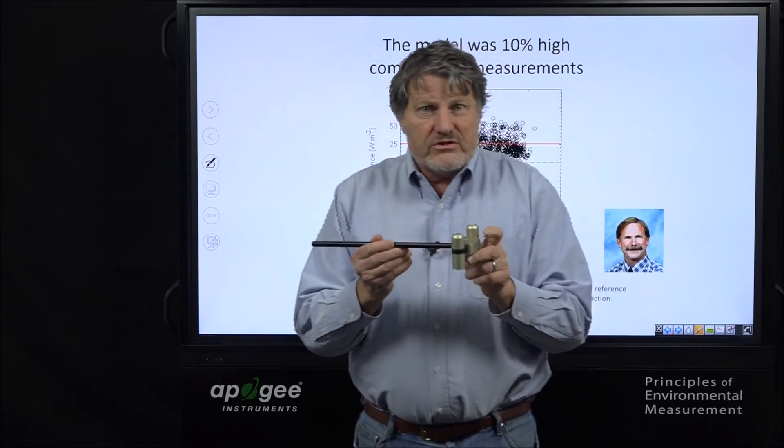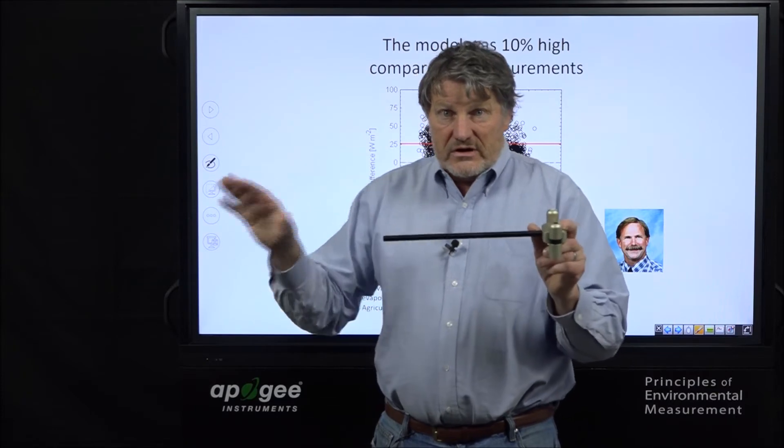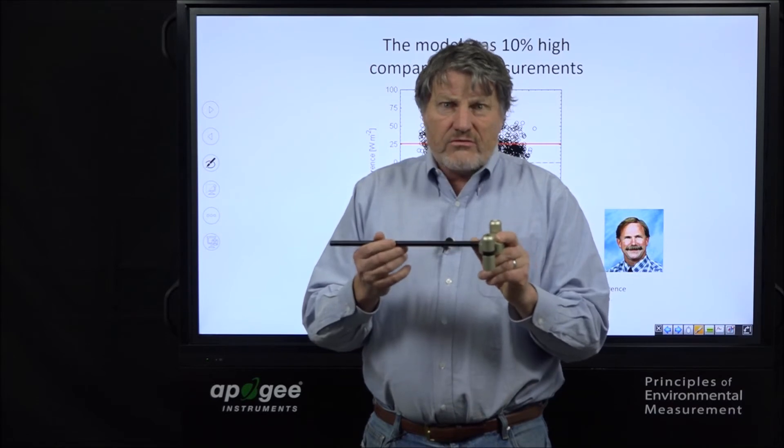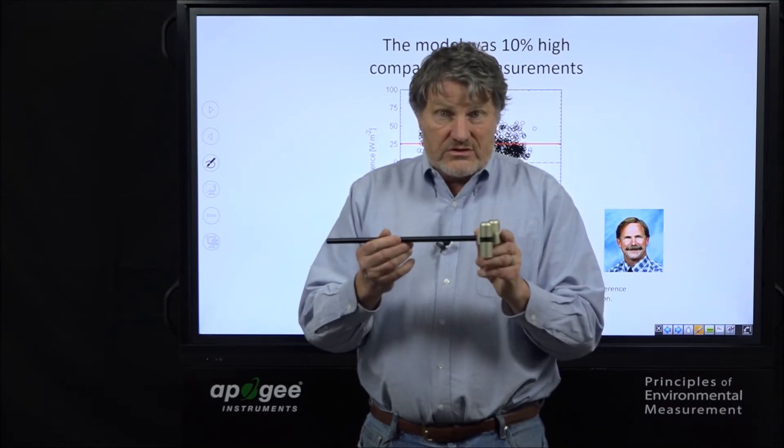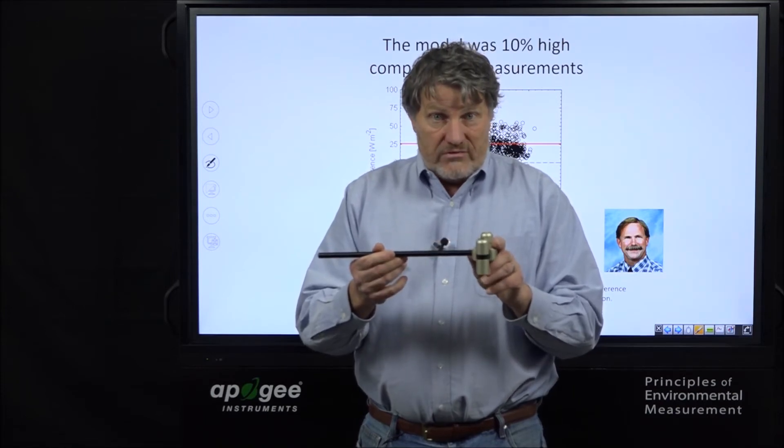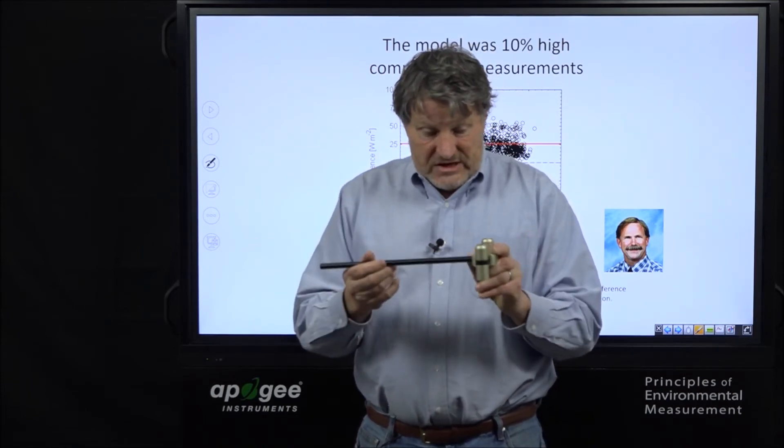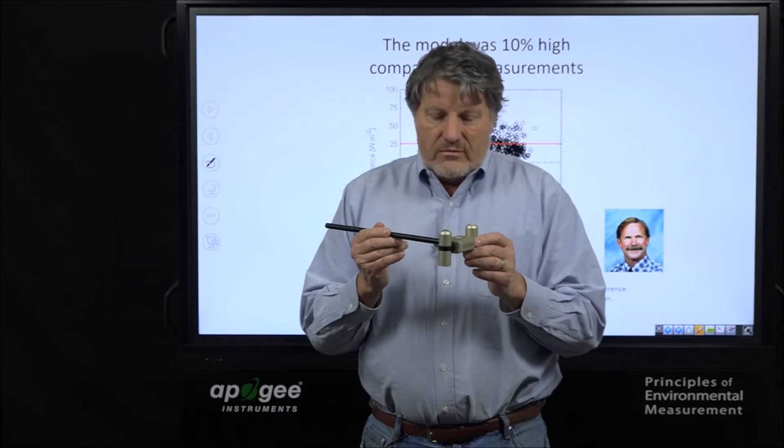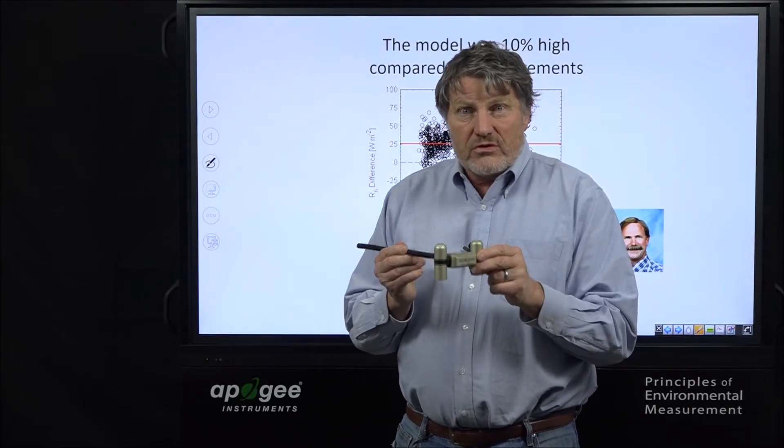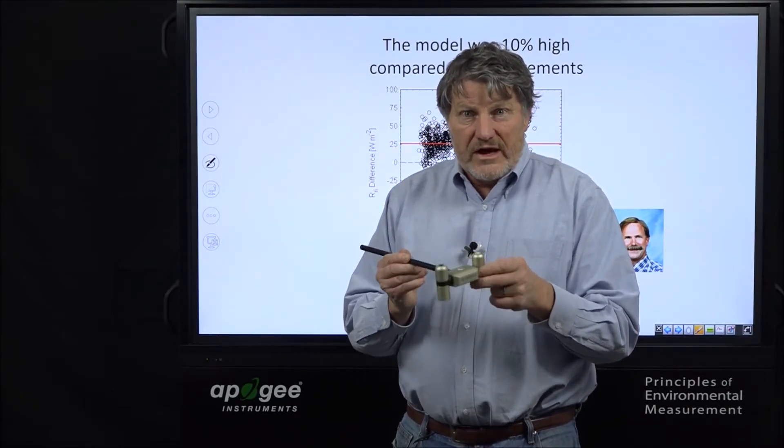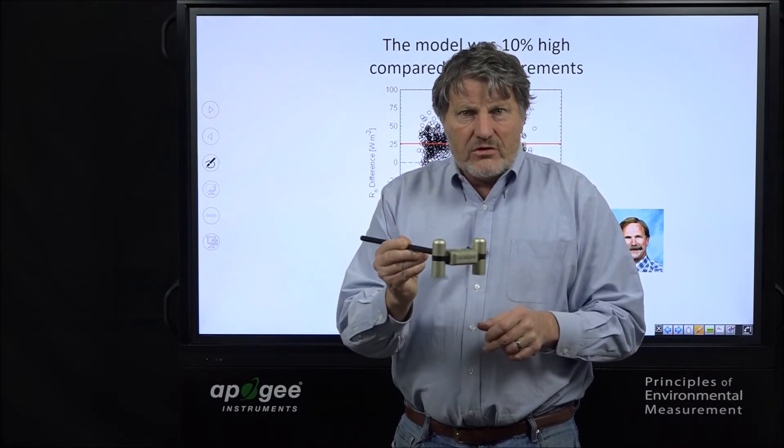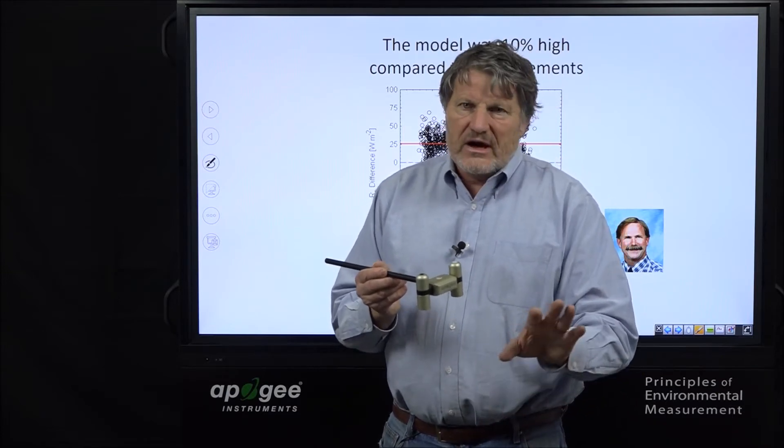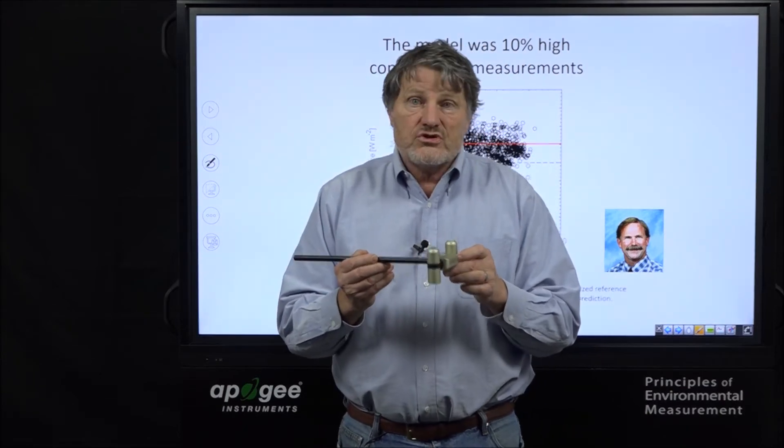This would take up, all of these instruments take up a lot of channels on a data acquisition system, which are precious channels that can be used for other things. So, in this, we made the output SDI 12 and it only takes up an SDI 12 channel. You can have multiple sensors in the same channel. So, we consider this a pretty fundamental breakthrough in the world of measuring net radiation. It's small, easy to level, and has, as I'm going to show you in a minute, has very comparable accuracy to the highest end instruments that cost considerably more.